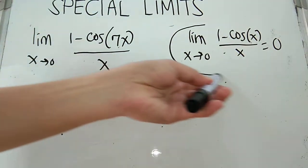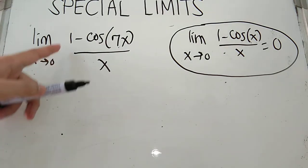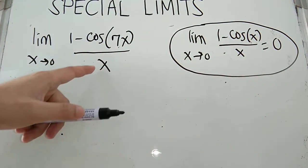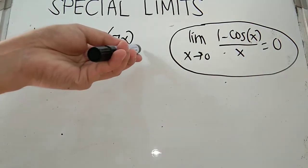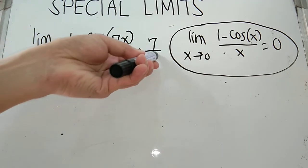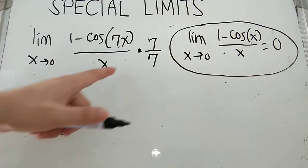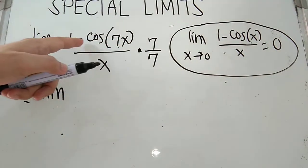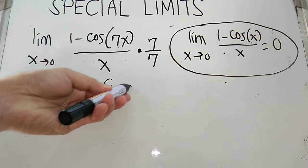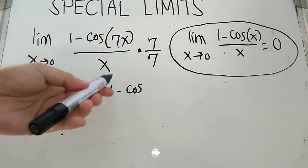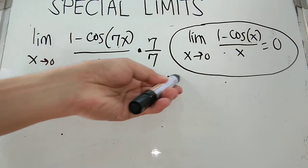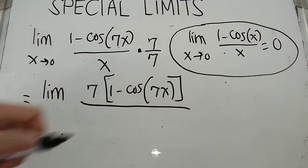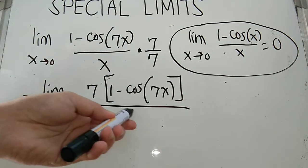We will be basing the given problem on this special limit theorem. We have 1 minus cos, but the argument inside cosine is 7x, so our denominator must also be 7x. How to do that? By multiplying both numerator and denominator with 7. Seven over 7 is 1, and multiplying by 1 brings us back to our original function. Simplifying, this is now the limit of 7 times (1 minus cos 7x) over 7x as x approaches 0.